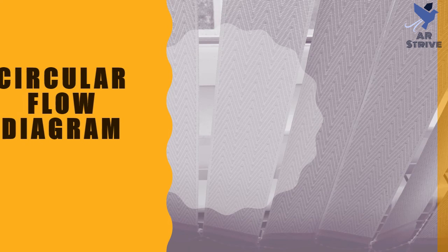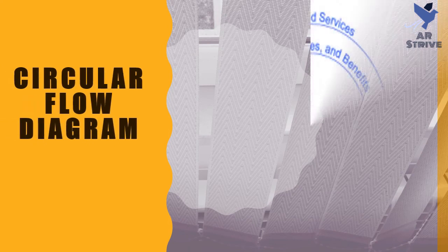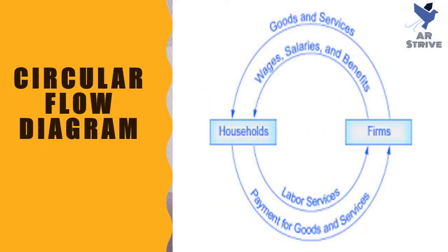The circular flow diagram shows how households and firms interact in the goods and services market and in the labor market. The direction of the arrows shows that in the goods and services market, households receive goods and services and pay firms for them. In the labor market, households provide labor and receive payment from the firm through wages, salaries and benefits.